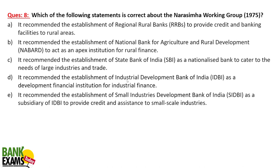Which of the following statements is correct regarding the Narasimha Working Group 1975? It recommended the establishment of RRBs to provide credit and banking facilities to rural areas. It also recommended the establishment of NABARD to act as an apex institution for rural finance. It did NOT recommend the establishment of SBI, IDBI, or SIDBI. So the correct answer is A — it recommended the establishment of RRBs.